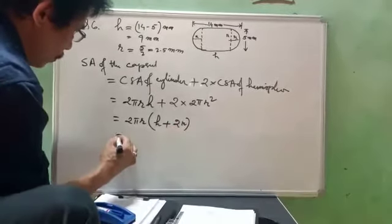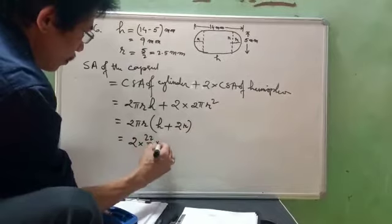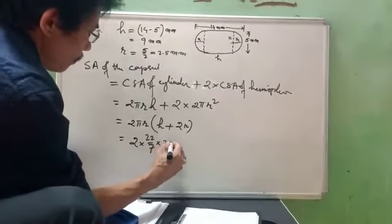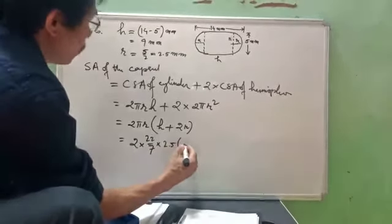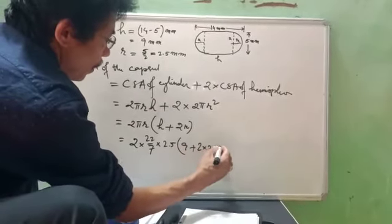So here goes the values. 22 by 7. The radius is 2.5. And then h is 9 plus 2 into 2.5.